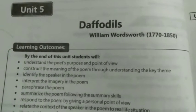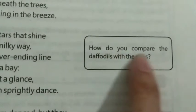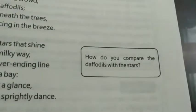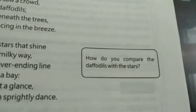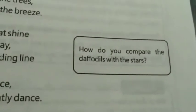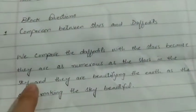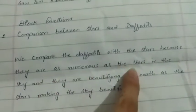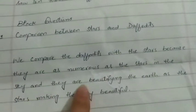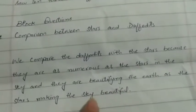First of all we are going to do block questions. Block question number 1: how do you compare the daffodils with the stars? The answer is: we compare the daffodils with the stars because they are as numerous as the stars in the sky, and they are beautifying the earth as the stars make the sky beautiful.